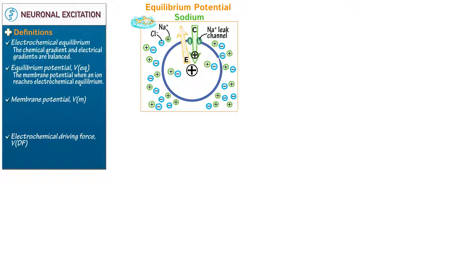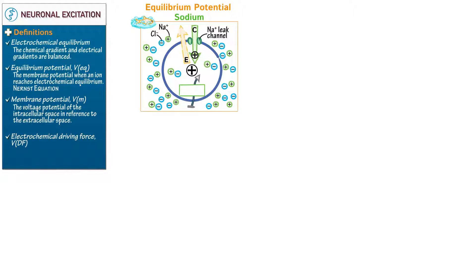We can predict the equilibrium potential by using the Nernst equation. Write that the membrane potential is the voltage potential of the intracellular space in reference to the extracellular space. Show that with a voltmeter, we can measure the membrane potential — it's simply the difference between the intracellular and extracellular voltages. We can predict the membrane potential by using the Goldman-Hodgkin-Katz equation.